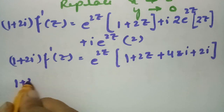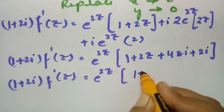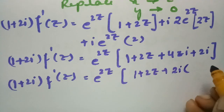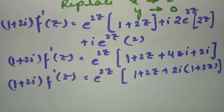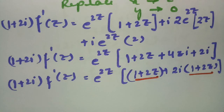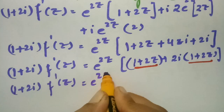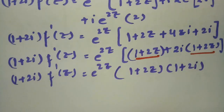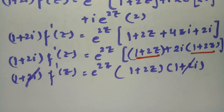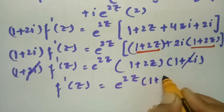So (1 + 2i)·f'(z) = e^(2z)·(1 + 2z) + i·e^(2z)·(4z + 2) = e^(2z)·(1 + 2z) + 2i·e^(2z)·(1 + 2z) = e^(2z)·(1 + 2z)·(1 + 2i). Canceling (1 + 2i) from both sides, f'(z) = e^(2z)·(1 + 2z).